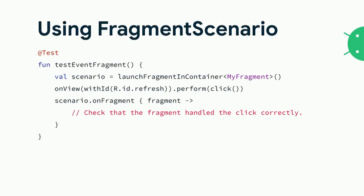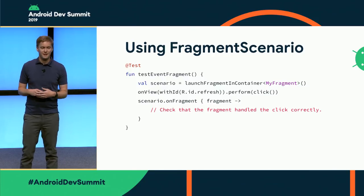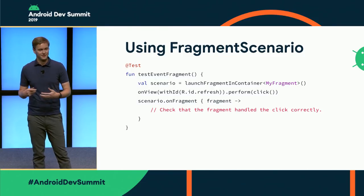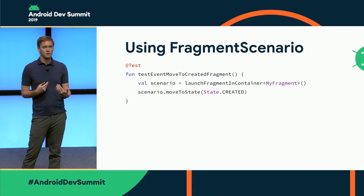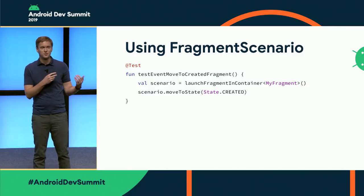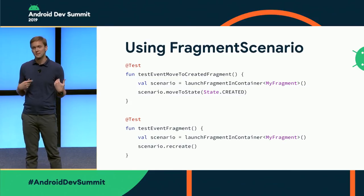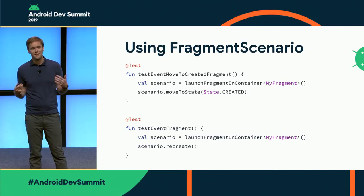FragmentScenario has a small API surface with one main method, onFragment, which takes a lambda and gives you the fragment instance. It also gives you hooks that make it easy to test lifecycle and recreation. You create your scenario using launchFragmentInContainer, which handles creating your activity, adding the fragment, and moving it to resumed. Then you can run Espresso tests — just say onView, click it — and use onFragment to check internal state. You can also call scenario.moveToState and scenario.recreate to test state save and restore.